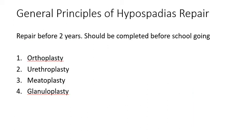General principles of hypospadias repair: repair should be done before the age of two, and all stages of repair should be completed before school-going age. The normal principles of repair are orthoplasty — straightening of the penis and correction of the ventral curve; urethroplasty — making a new urethra for the deficient segment; meatoplasty — making a normal-shaped external meatus; and glanuloplasty — making a normal-shaped glans.